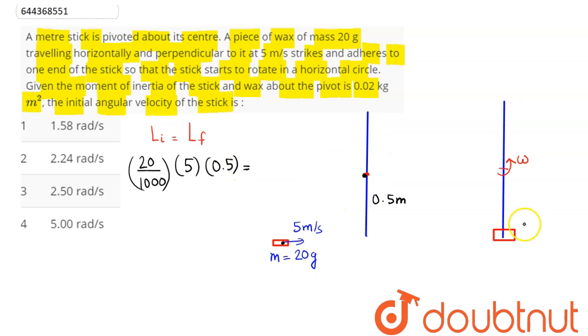Final angular momentum of the whole system is I·ω. The moment of inertia of stick and wax about the pivot is 0.02, so this is 0.02·ω, which we need to find out.